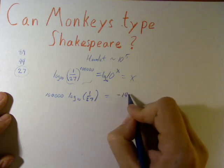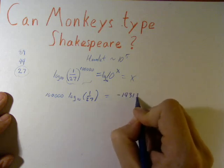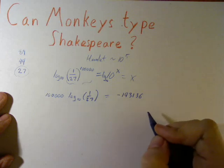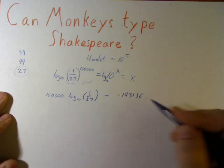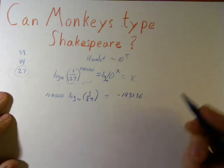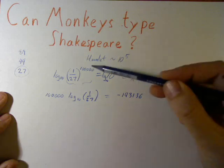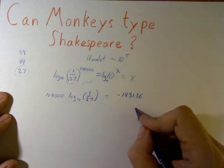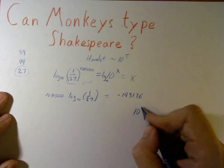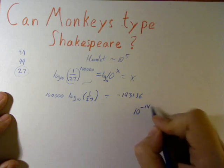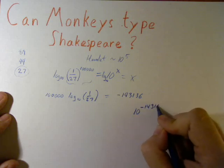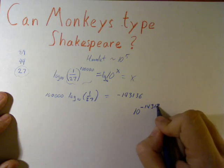negative 1, 4, 3, 1, 3, 6. In other words, the probability from just typing randomly out 100,000 characters, is 10 to the negative 143,136.